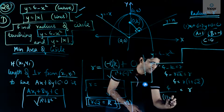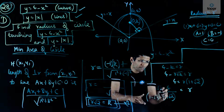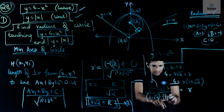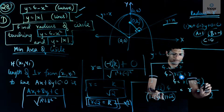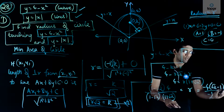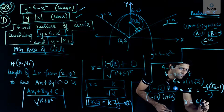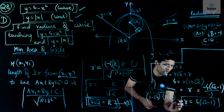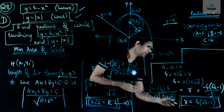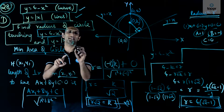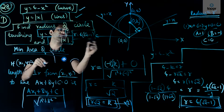So r = 4 / (1 + √2). Rationalizing by multiplying numerator and denominator by (1 − √2): the denominator becomes 1² − (√2)² = 1 − 2 = −1, and the numerator becomes 4(1 − √2). Cancelling the minus signs gives r = 4(√2 − 1). Therefore, the radius of the circle with minimum area is r = 4(√2 − 1) units.